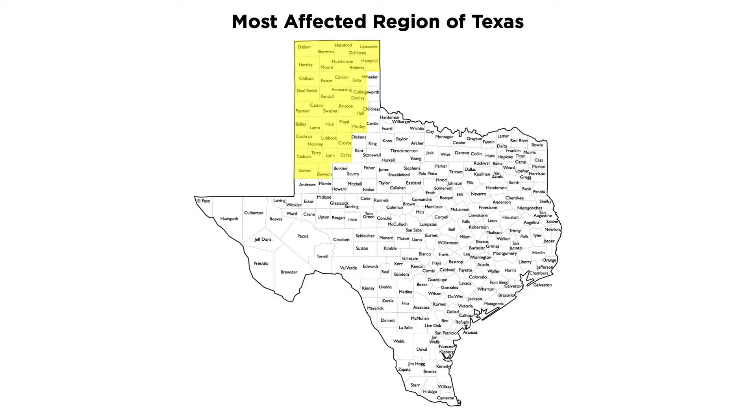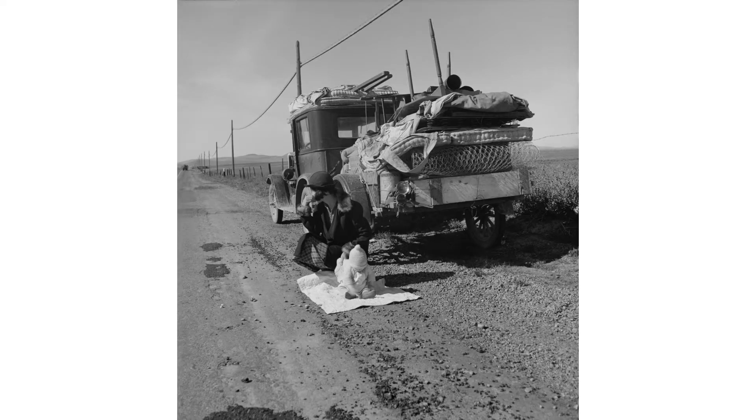Many Texans from cities like Dalhart, Pampa, Spearman, Amarillo, and Lubbock lost their livelihoods during this time because of crop failure and terrible living conditions. Texans, along with many others from Great Plains states, moved to find better living conditions and employment. Roughly two and a half million people left these states in the largest migration in American history. Millions were left homeless, facing discrimination, menial labor, and poor wages, where they lived in shacks and tents.